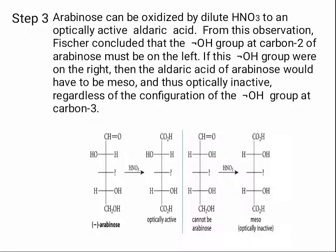Step 3: arabinose can be oxidized by dilute nitric acid to an optically active aldaric acid. From this observation, Fischer concluded that the OH group at carbon 2 of arabinose must be on the left. If this OH group were on the right, then the aldaric acid of arabinose would have to be meso and thus optically inactive, regardless of the configuration of the OH group at carbon 3.